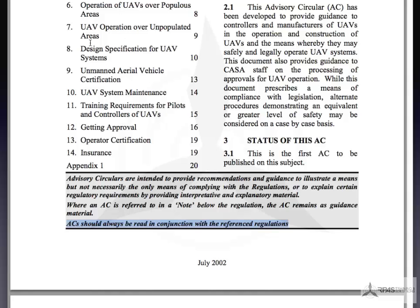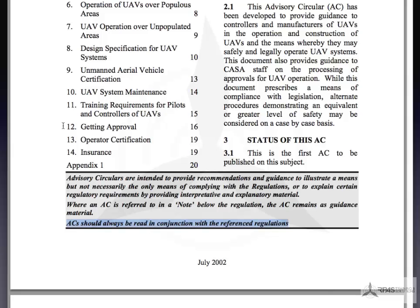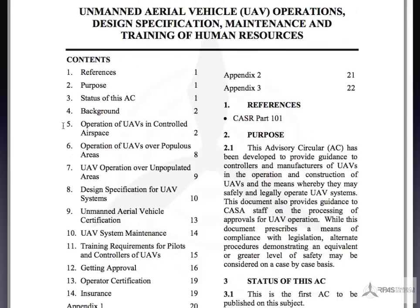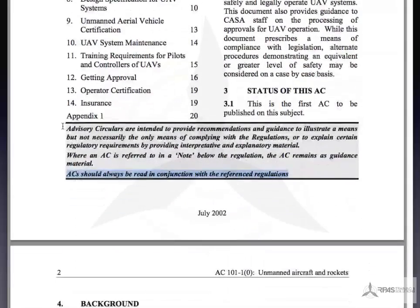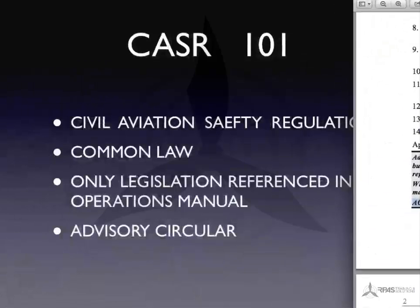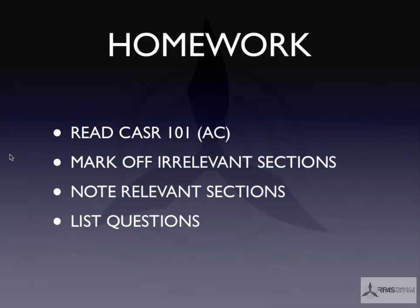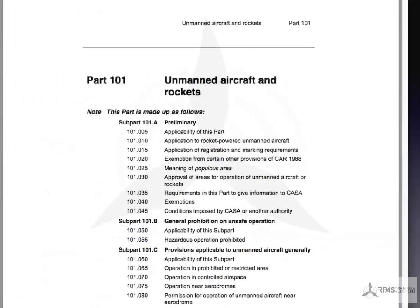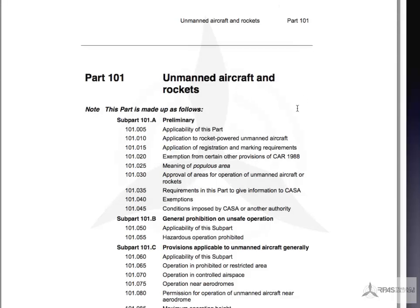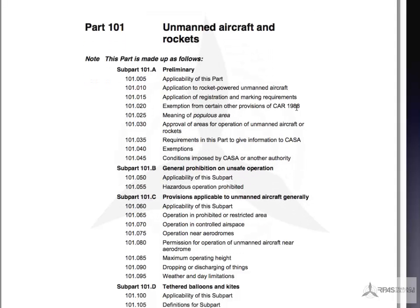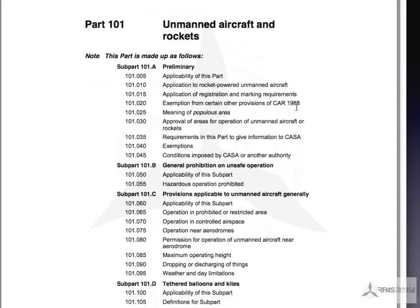So that's the AC 101. Now you've probably seen that — if you haven't, I suggest you get hold of it. We can give it to you. It's a reasonably extensive document. What we're going to do is some homework on CASR 101. This is the actual CASR 101 document — a much more substantial document. This is the CASR Part 101, which is part of Australian Common Law.